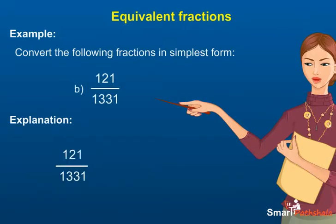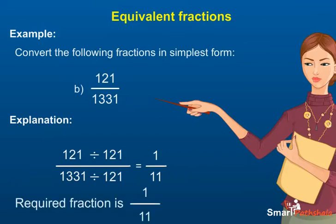B: the highest common factor or HCF of 121 and 1331 is 121. So, we divide 121 and 1331 by 11 to get 1 and 11 respectively. So, the required fraction is 1 upon 11.